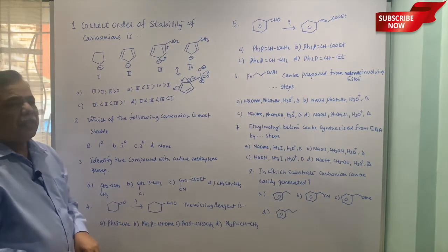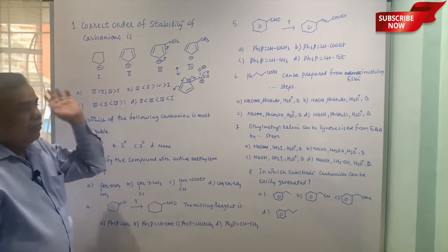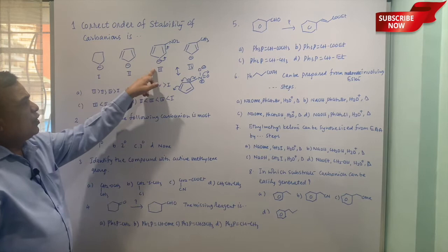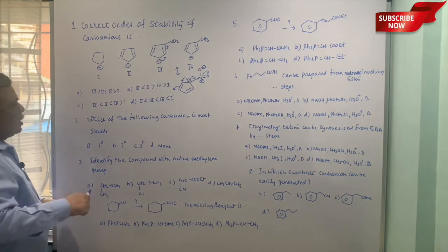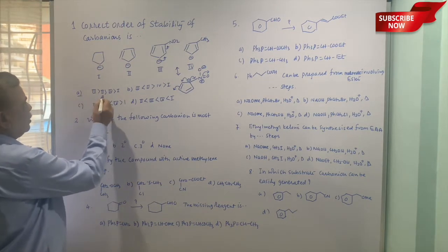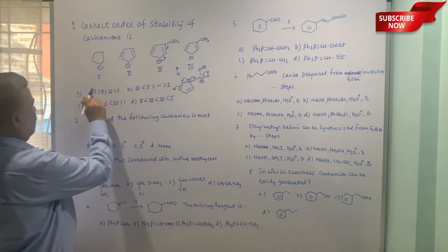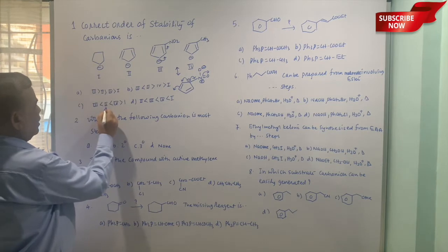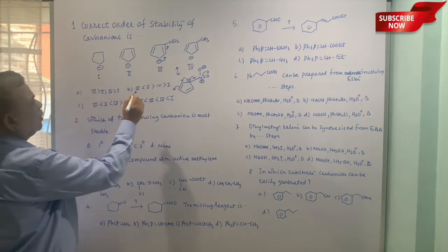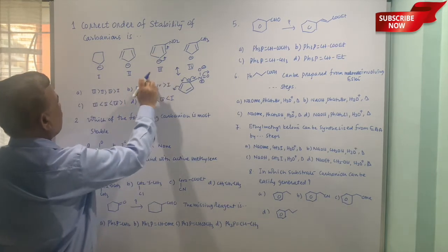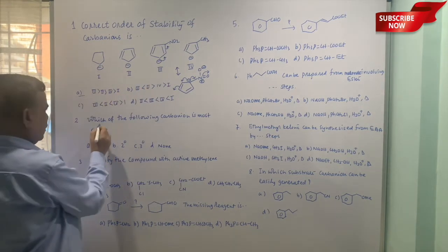In this case resonance is not possible because CH3 will in fact destabilize the carbanion. If negative charge comes here and methyl group is there, that is electron donor, it will destabilize the carbanion. So three should be first, then second, then this one. So the first order is correct. Third is more stable than second, then comes fourth, and then comes here.